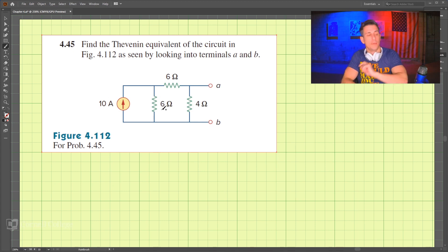The first step is to turn off all independent power supplies, so independent sources. We're going to turn that off and find the resistance, the equivalent resistance between the terminals.